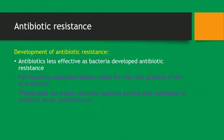Now let's talk about antibiotic resistance. Antibiotics become less effective as bacteria develop resistance. This is when a few bacteria possess alleles coded for in ways that prevent the effect of the antibiotic. Widespread use means that resistant bacteria will survive and reproduce, so the resistance gene will predominate. Essentially, bacteria develop a mutation that allows the antibiotic not to work against them and therefore they survive, reproduce and predominate.